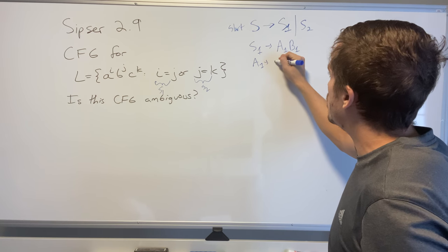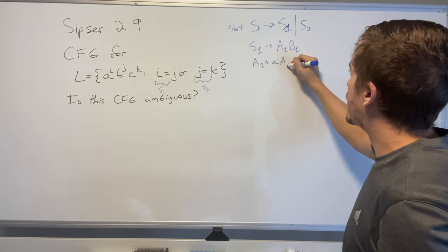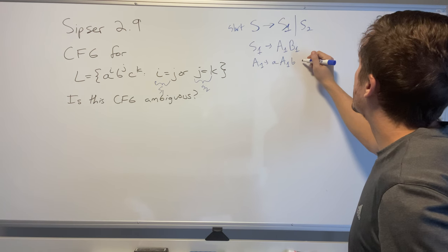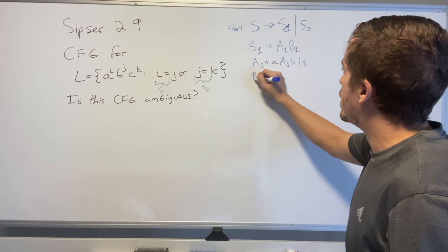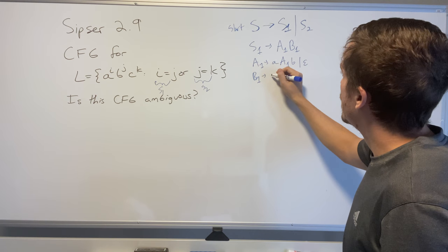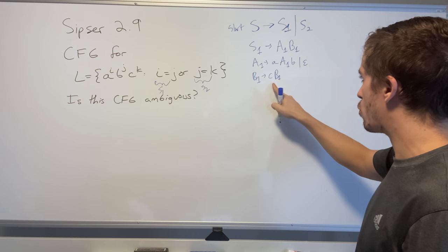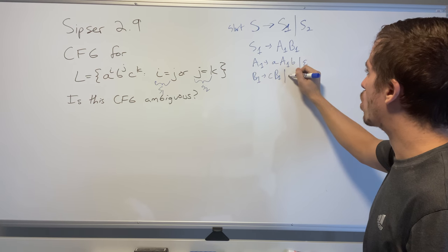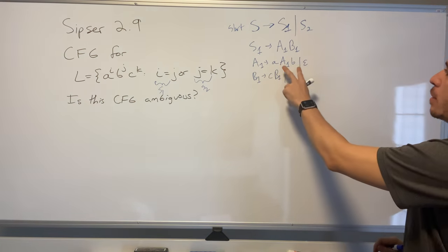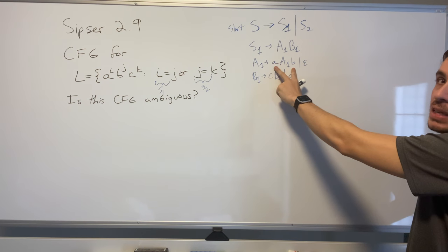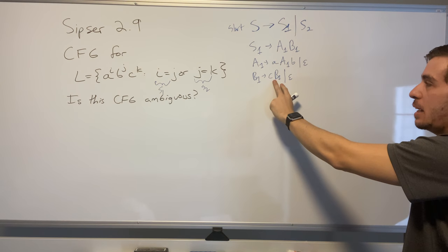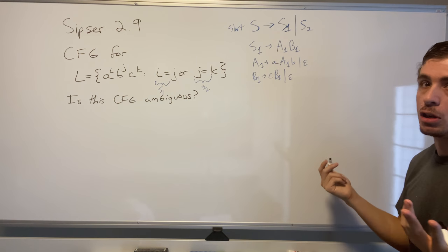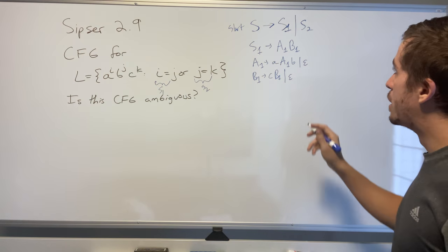So A1 is going to go to a, A1, b or epsilon. And then B1 is just going to go to c, B1, so I can make one more c if I want to, or empty. So the A1 has an equal number of a's and b's at any point, and the B1 has as many c's as needed because it's just irrelevant.